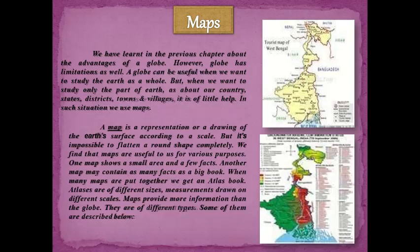We find that maps are useful to us for various purposes. One map shows a small area and a few facts, while another map may contain as many facts as a big book. When many maps are put together, we get an atlas. Atlases are of various sizes and are drawn on different scales. Maps provide more information than a globe and they are of different types.